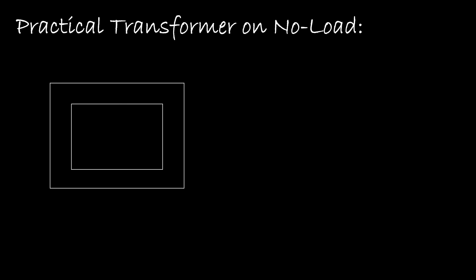Here we have considered a core type transformer. This particular winding will be called the primary winding, as we are going to connect the supply voltage on this side. This is the supply voltage — let us assume this as V1. On the other side, we have one more winding called the secondary winding. Usually we connect the load here, but now we are studying the no load condition, so there won't be any load on the secondary side.